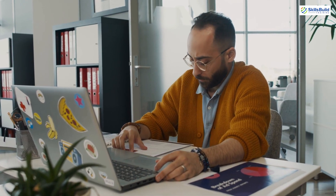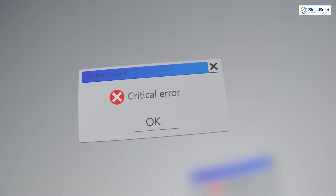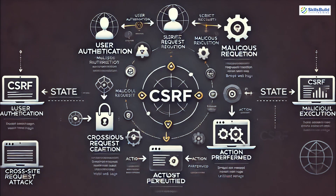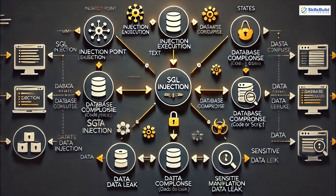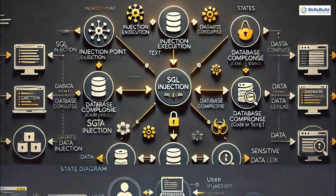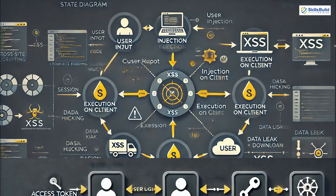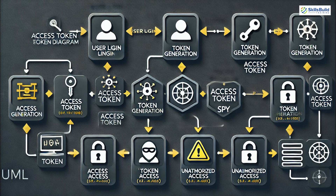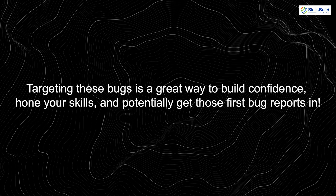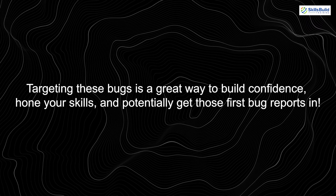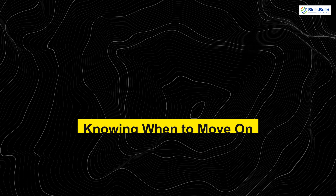Beginner-friendly bugs to look for: if you're just starting, focus on what we call low-hanging fruits — common vulnerabilities that are relatively easy to identify. Examples include cross-site request forgery (CSRF), which allows an attacker to perform actions on behalf of a user without their consent; SQL injection, where malicious SQL queries are used to access or manipulate databases; and cross-site scripting (XSS), which involves injecting and executing malicious JavaScript. Another vulnerability to watch for is access token harvesting, where attackers steal tokens that give them unauthorized access to user accounts. Targeting these bugs is a great way to build confidence, hone your skills, and get those first bug reports in.